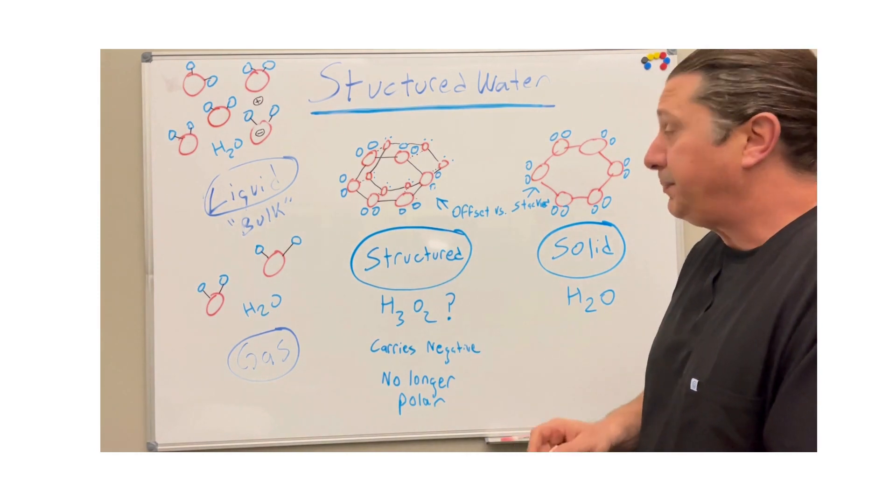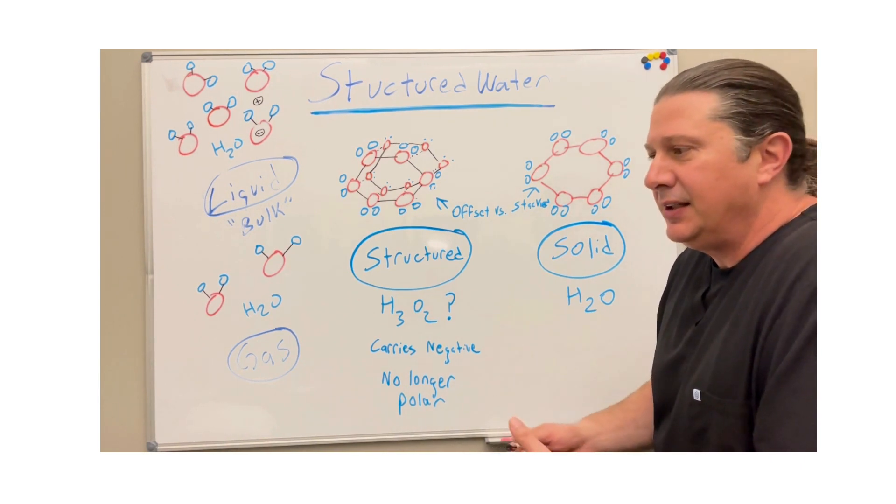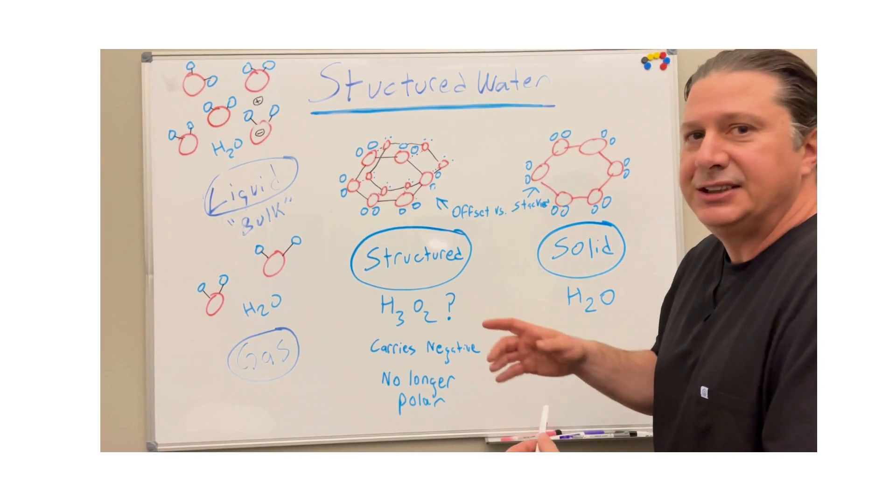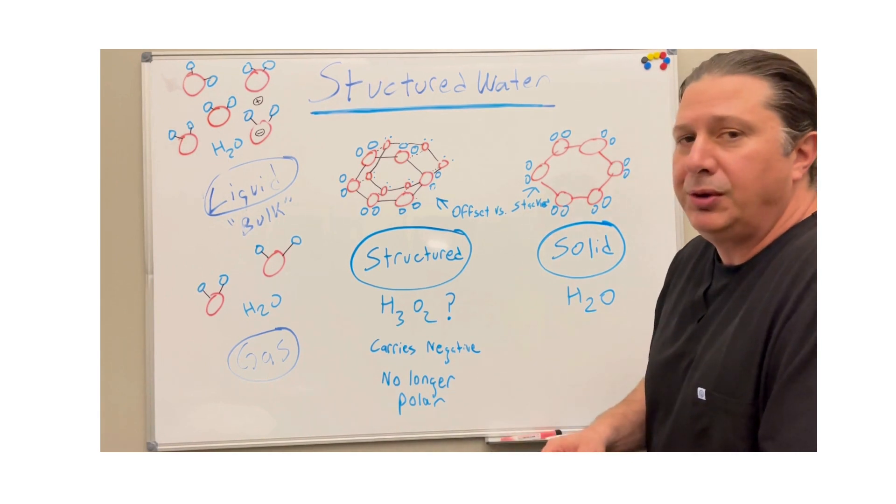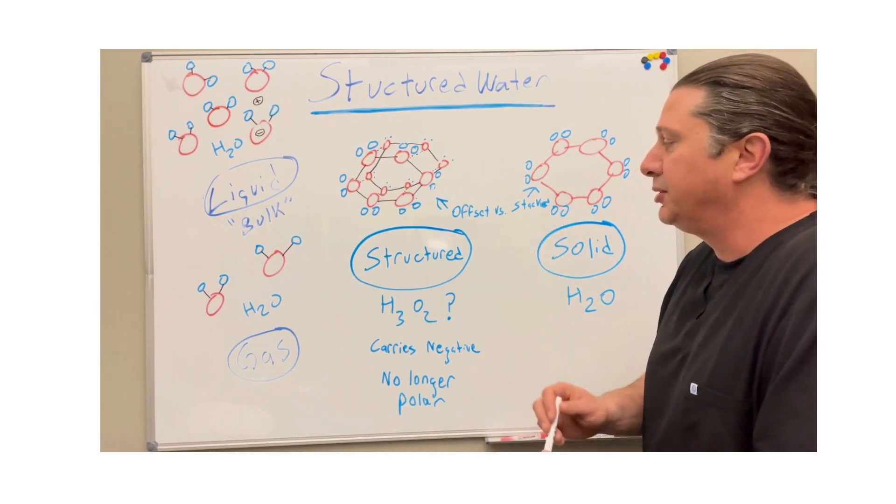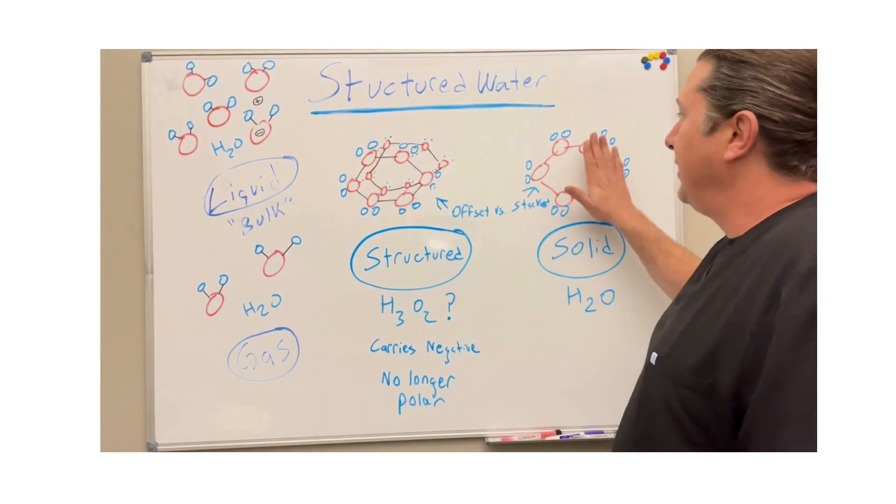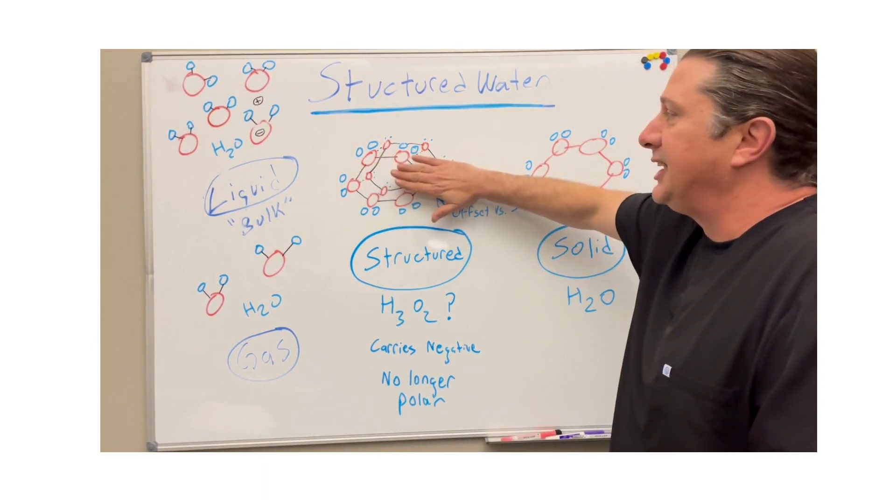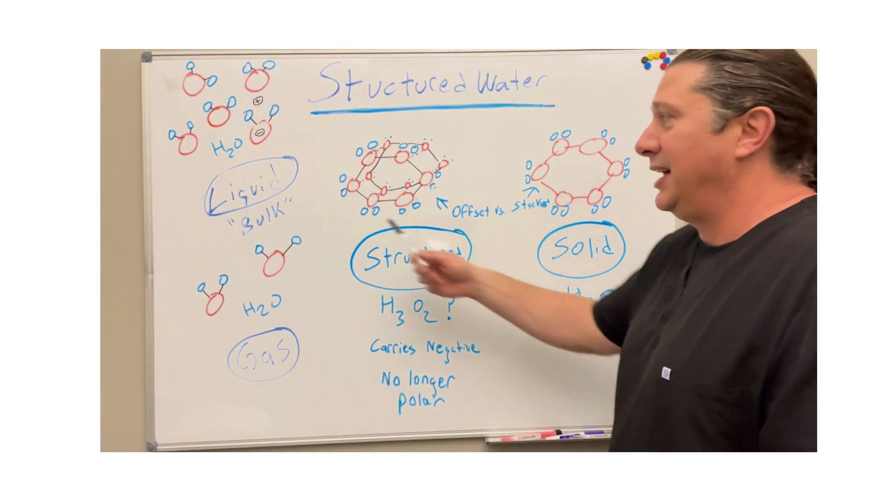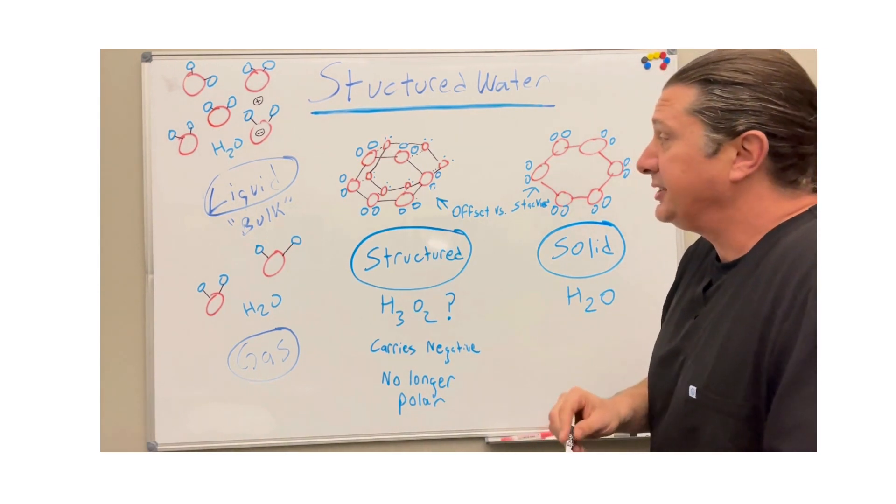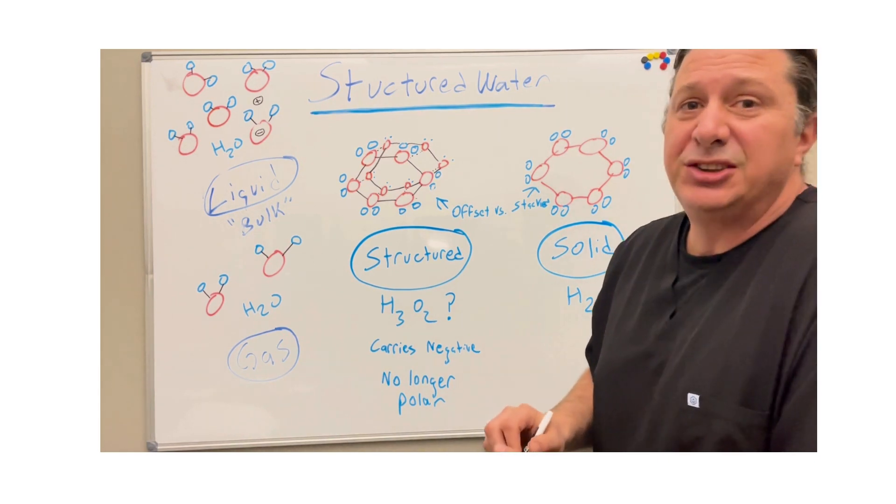Structured water is unique in the fact it's not even really water anymore. It's actually H3O2 and temporarily, meaning it's in and out of phase. It's water, but it's sharing an electron. So it carries a negative charge. It's no longer polar. There's an extra electron within the structure of water. Now structured water is interesting in the fact that it doesn't stack like ice. It offsets. It's just layers of offsetting that make it not as solid, not as liquid, more of a gel. That's the basic chemistry of structured water.